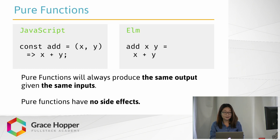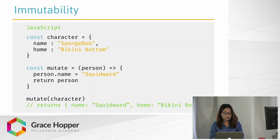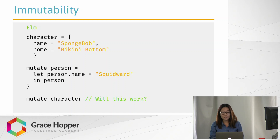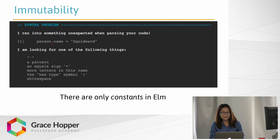Pure functions also don't cause any side effects, leading us to our next core feature of functional programming: immutability. Here is an example of some JavaScript code. You have an object character and a function mutate, which will reassign the property name to a new value. This is a perfectly valid operation in JavaScript, even though character isn't a const. However, if we try to do something similar in Elm, we get an error. The Elm compiler has no clue what we're trying to do at all — the language simply doesn't allow mutation like this. There are only constants in Elm.